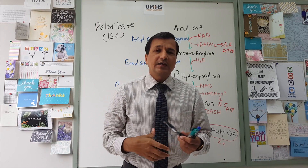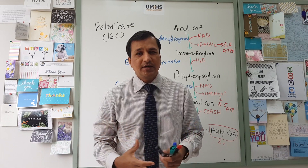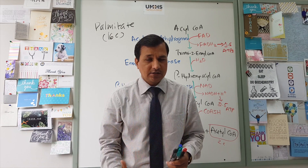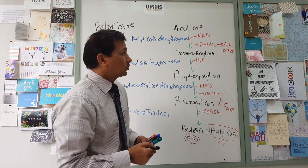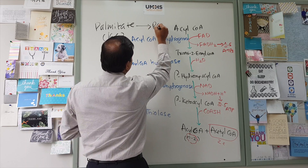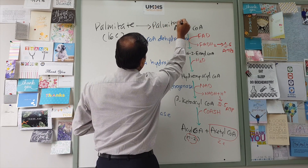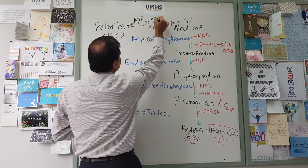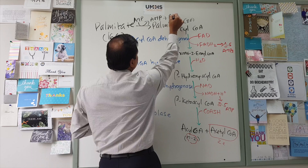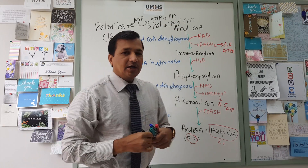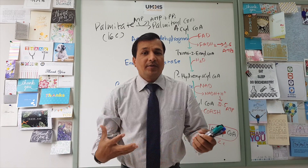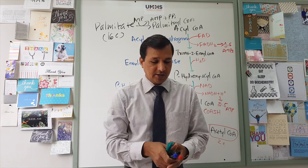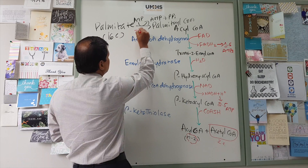For palmitate to enter beta oxidation, we need to activate it into palmitoyl-CoA. Any fatty acid that has to get into a reaction must be in its active form. This reaction uses ATP and releases AMP (adenosine monophosphate) plus PPi (inorganic pyrophosphate). This is done by acyl-CoA synthetase, also called palmitoyl-CoA synthetase, and it consumes two equivalent ATPs. We need to remember there will be a consumption of two ATPs here.